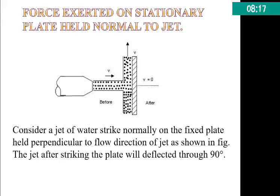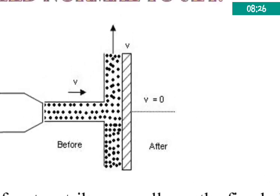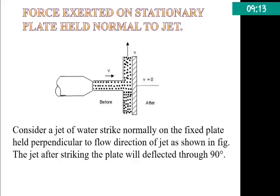Coming to the first point: force exerted on stationary plate held normal to the jet. If you can see this figure clearly, to a pipe we are connecting a nozzle — because we want the water to flow with higher velocity. When the water is flowing with higher velocity, it will have some impact which is exerted on the vane. You can see a flat vane which is hatched, held normal to the jet. This shows before and after: before striking, the velocity is v in the x direction; after striking, it is 0 because there is no velocity in the x direction after striking.